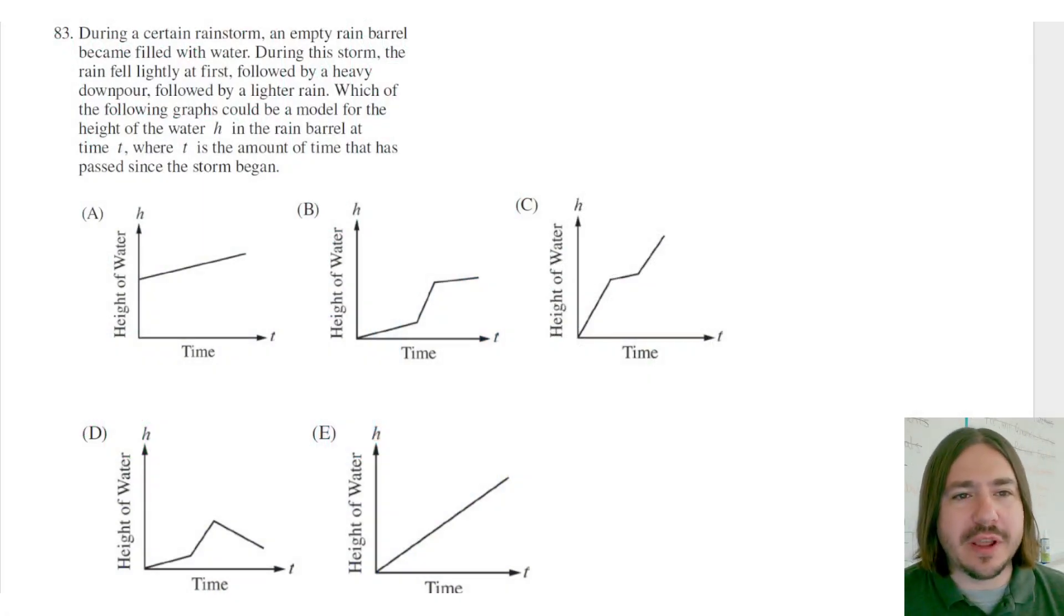Number 83 says, during a certain rainstorm, an empty rain barrel became filled with water. During the storm, the rain fell lightly at first, followed by a heavy downpour, followed by a lighter rain. Which of the following graphs could be a model for the height of the water, H, in the rain barrel at time T, where T is the amount of time that has passed since the storm began.